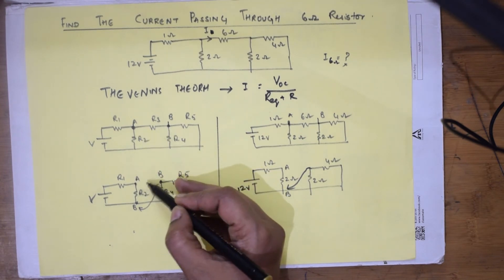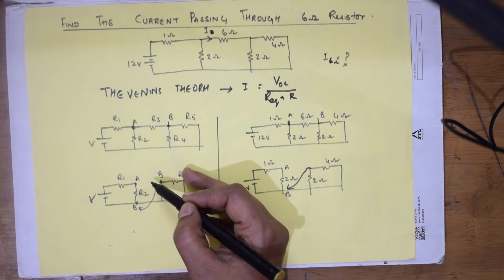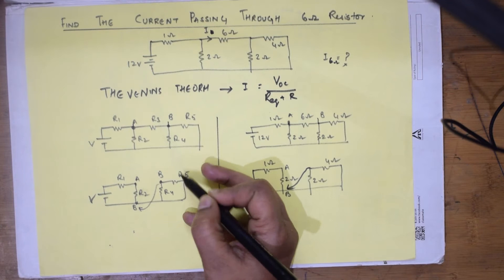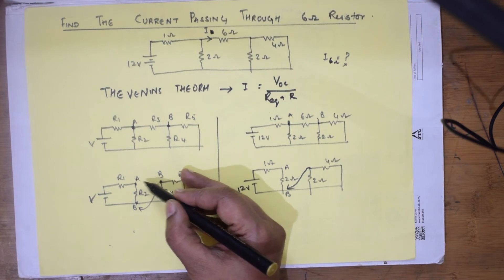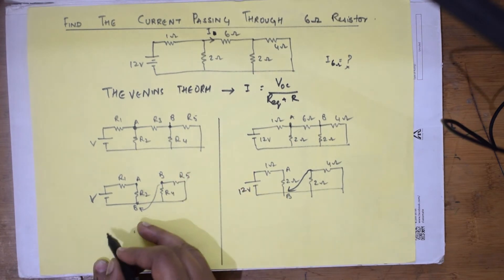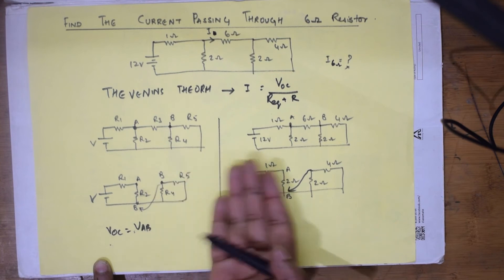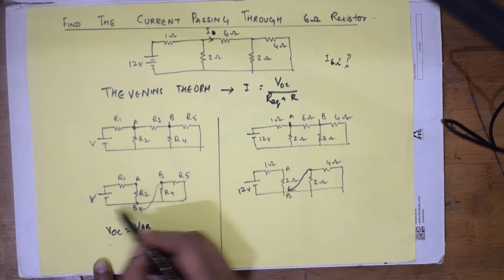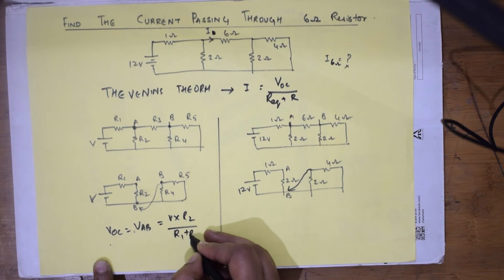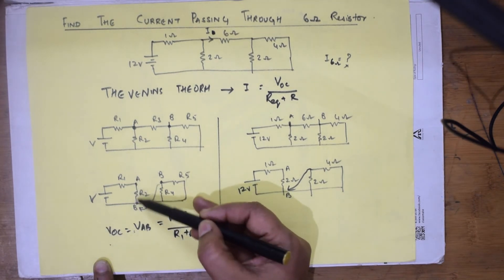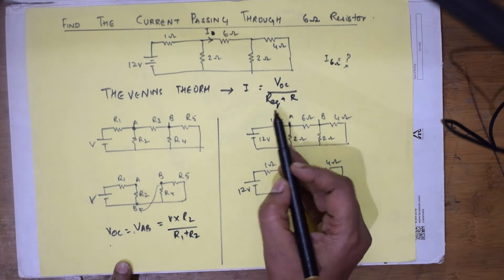When you open the circuit at R3, VOC becomes the voltage across R2, because there is no current flowing through R4 and R5 — that branch is completely disconnected. Therefore VOC equals VAB, and the formula becomes: VAB = V × R2 / (R1 + R2). This is the voltage divider formula applied across R2.